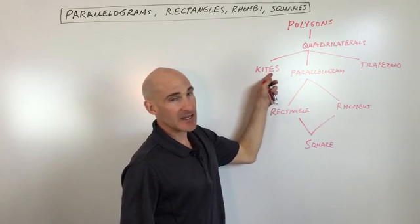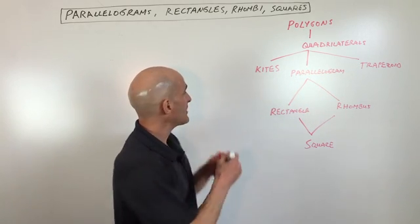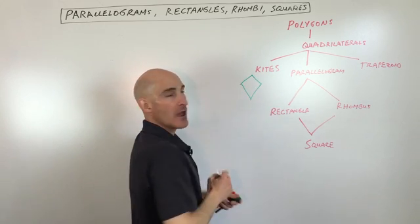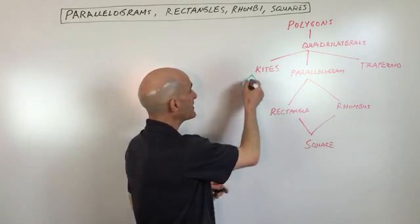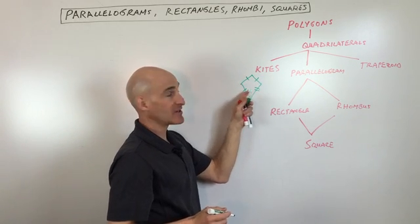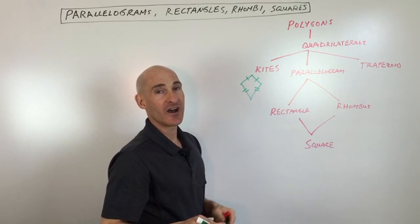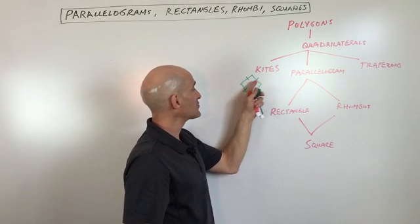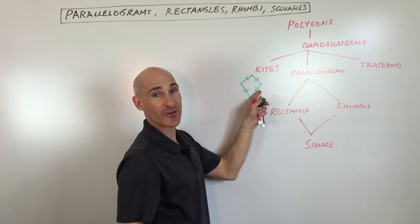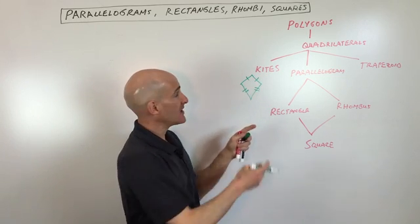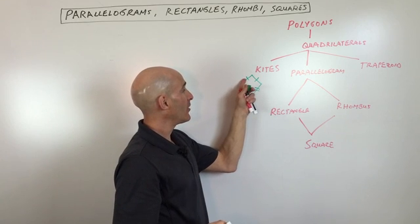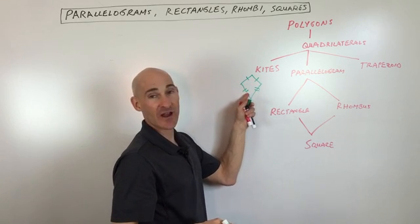A kite actually looks something like this. What's interesting about a kite is it has two pairs of consecutive sides — meaning the sides that are next to each other — that are congruent. So these two sides are congruent, these two sides are congruent, but these are not congruent. A kite has no pairs of opposite sides parallel — so these are not parallel and these are not parallel.